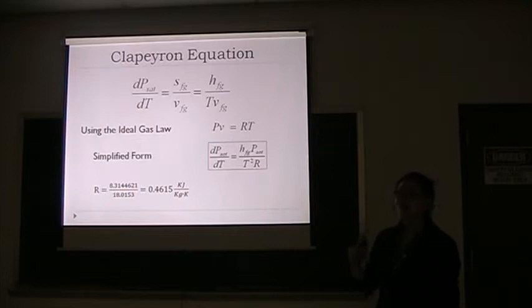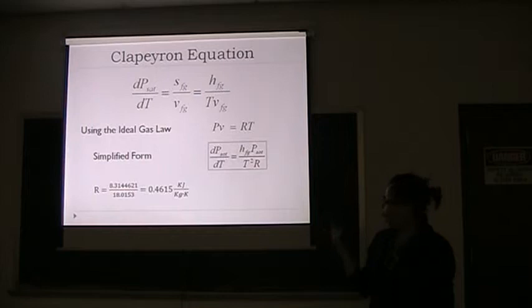Using the ideal gas constant 8.314 kJ/(kmol·K) divided by the water molar mass 18.01, the gas constant of boiling water is 0.4615 kJ/(kg·K).